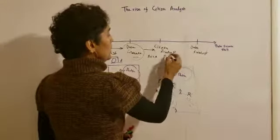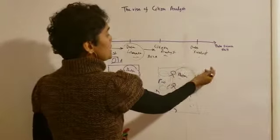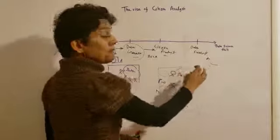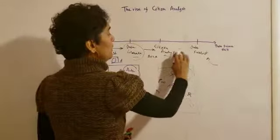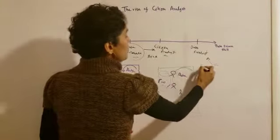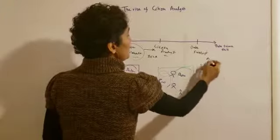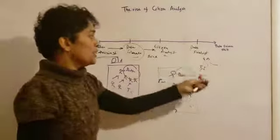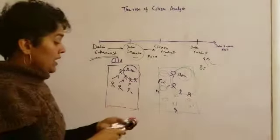Now typically citizen analysts don't move towards data scientists. Typically data scientists come from a different background, but a good data science program can move people as well, can mature people. Maybe people from BI background or analytics background can move towards data science. The data literacy program, depending on how you're structuring it, they can move on.